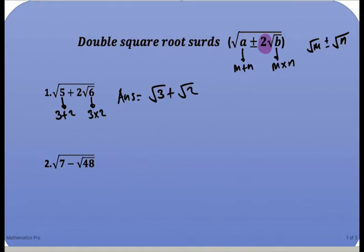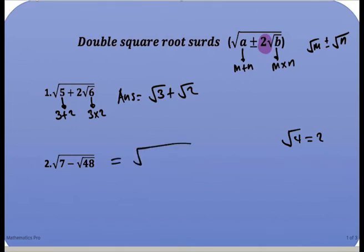Now looking at the second example, we have the square root of 7 minus the square root of 48. There is no 2 in front of 48, but we should not forget that the square root of 4 is equal to 2. So if we solve this problem we have to make sure that 2 should be in front of b. So we are going to have the square root of 7 minus...